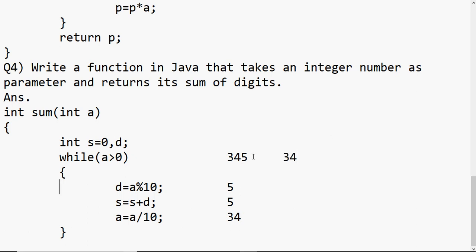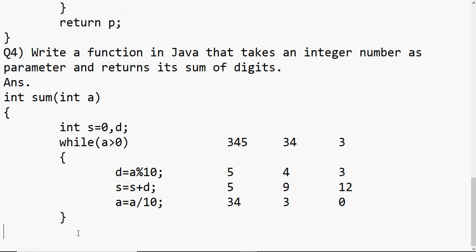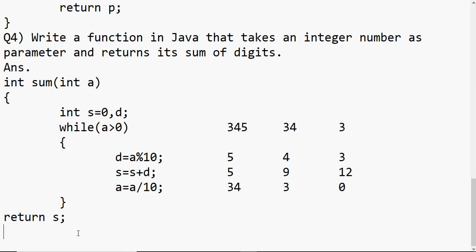Then 34 > 0 is true, and 34 mod 10 gives 4; sum becomes 9, number becomes 3. Then 3 > 0 is true; 3 mod 10 gives 3 — when the number is less than 10, the remainder is the number itself — sum becomes 12, number becomes 0. Finally, 0 > 0 is false, so we exit the loop and return s, which is 12 — that's the sum of digits. The trace-through was just to explain how the code works; only the function code needs to be written in the exam.